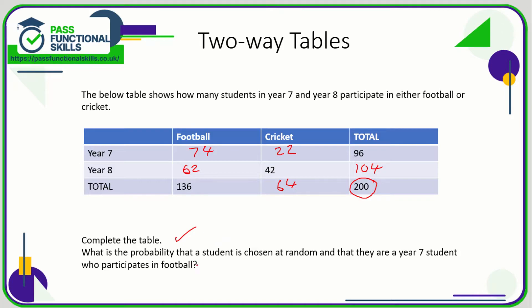What is the probability that a student is chosen at random and they are a year seven student who participates in football? What we need to do is find out how many year seven students participate in football. Year seven football — that is 74. So that is 74 out of the grand total, which is 200. So the probability is 74 over 200. We can simplify this fraction — that simplifies to 37 over 100, dividing top and bottom by two.